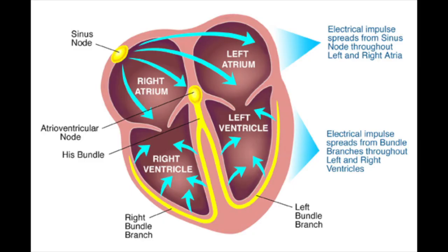The conduction path of the electrical system starts from the SA node, then goes to the AV node, makes its way to the bundle of His, then the bundle branches, and last but not least, the Purkinje fibers. The SA node, located in the right atrium, activates both the atria through constant electrical impulses. After the atria are activated, the electrical impulses travel down to the AV node, where they are slowed down momentarily, allowing the atria to contract right before the ventricles do. From the AV node, the impulses travel down through the bundle of His, which separates into left and right bundle branches, causing both ventricles to contract. The ventricles contract in unison due to the Purkinje fibers, which allows there to be a consistent heartbeat and rhythm.